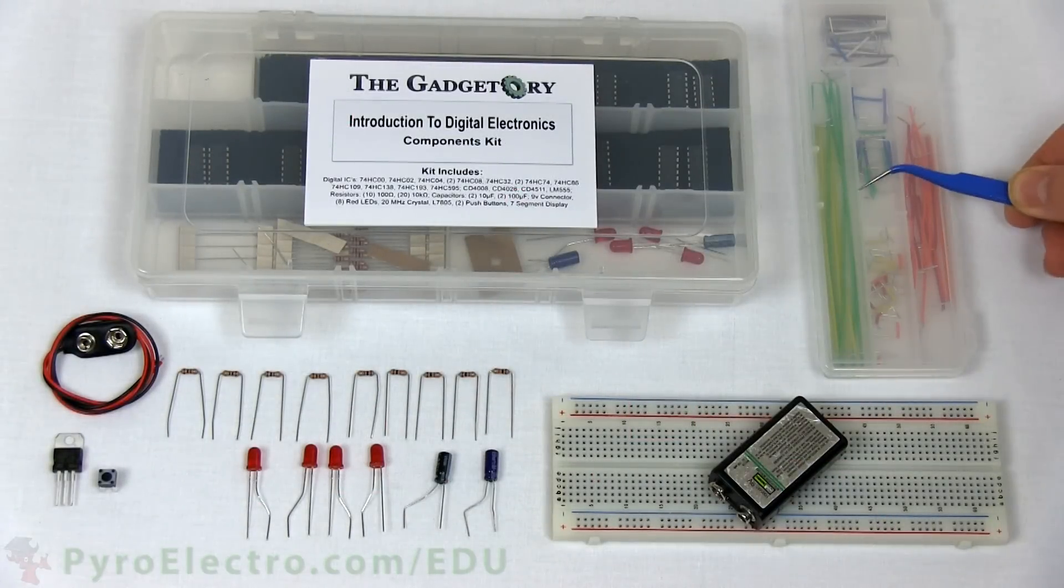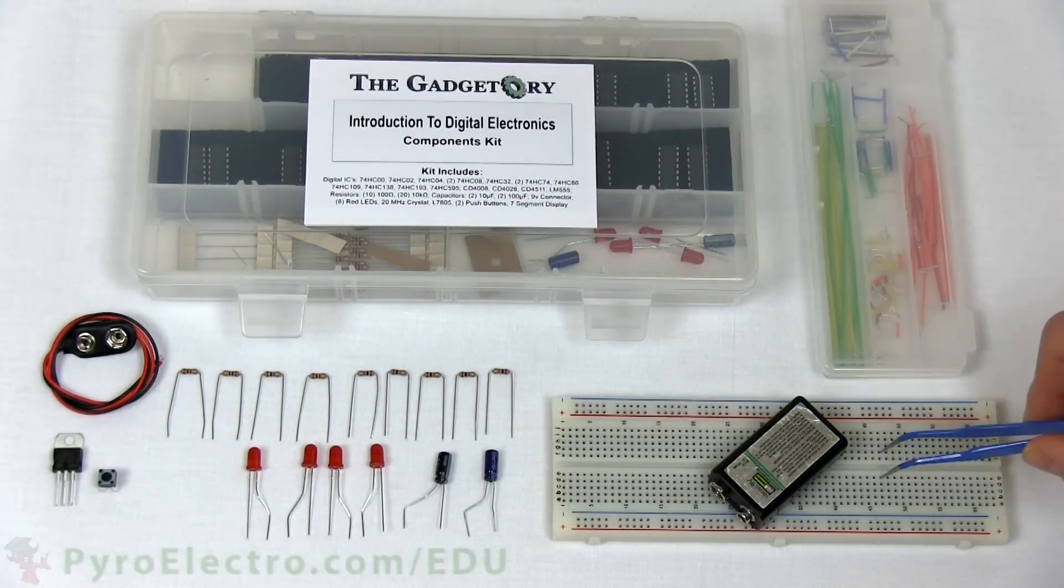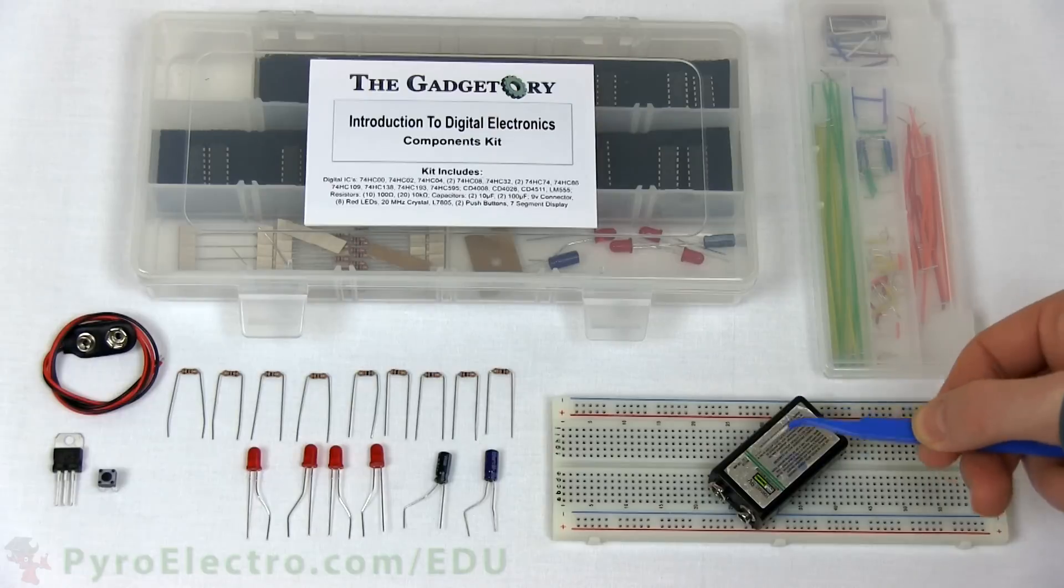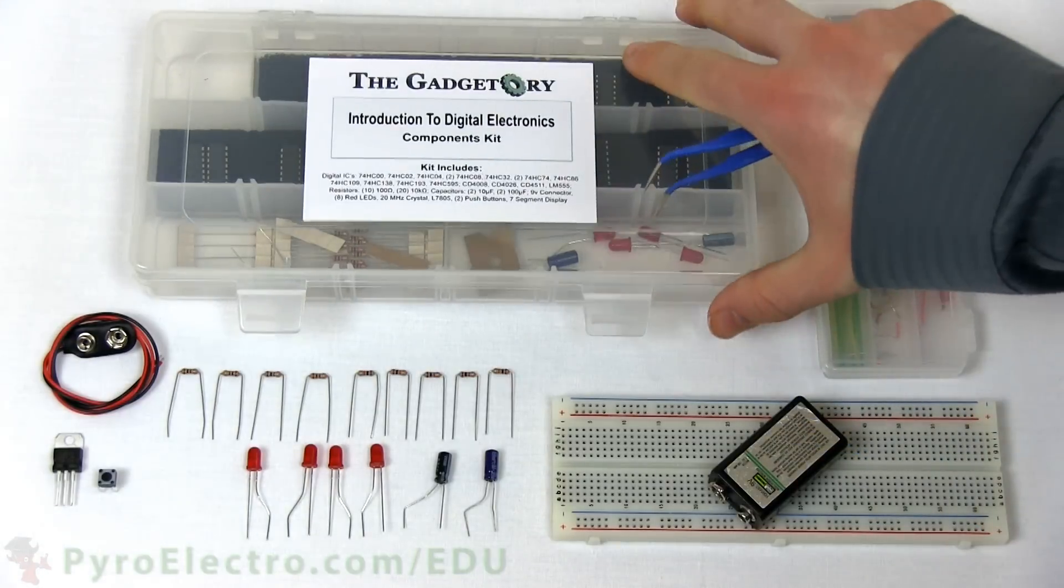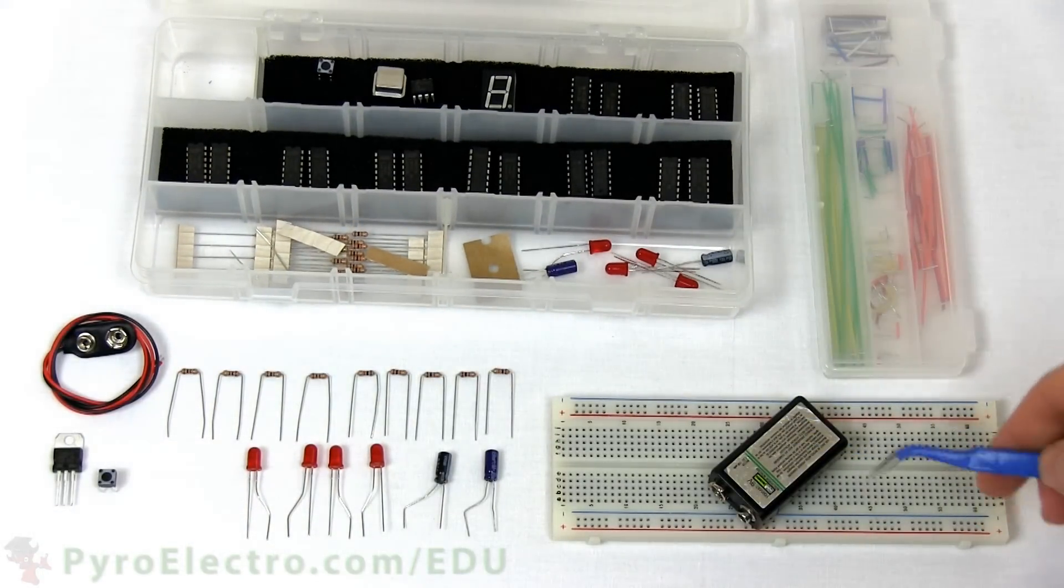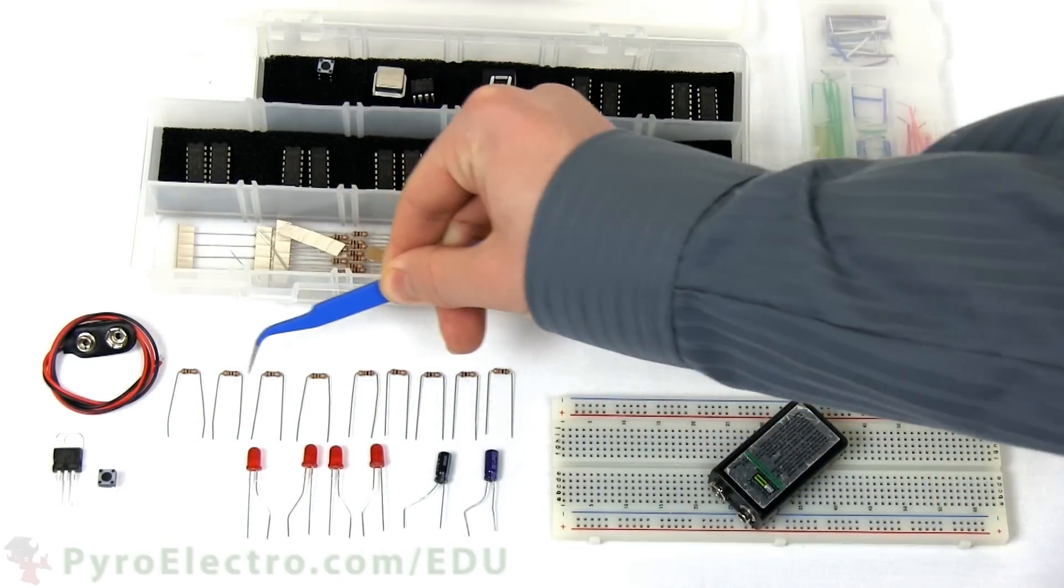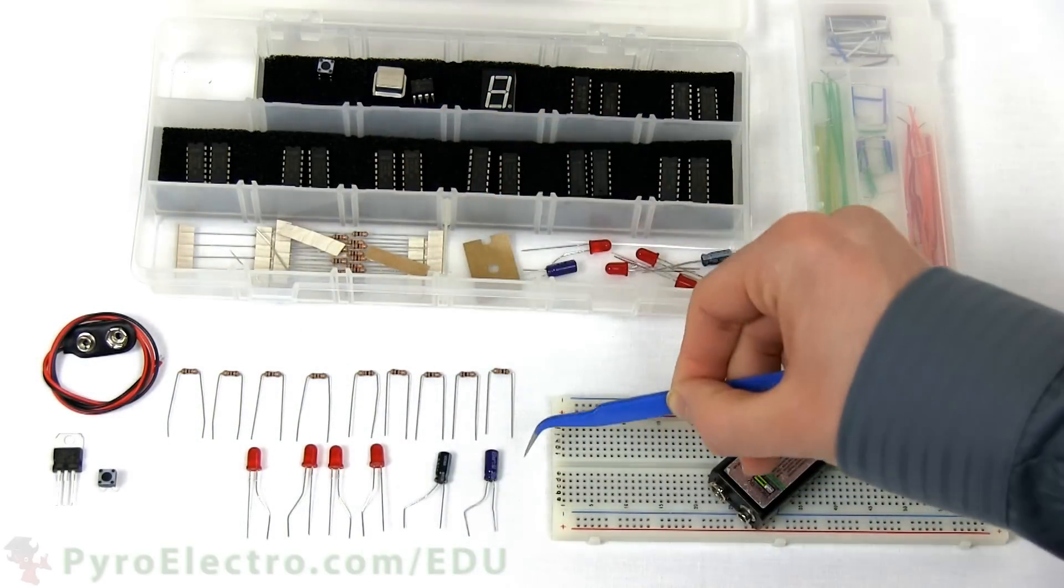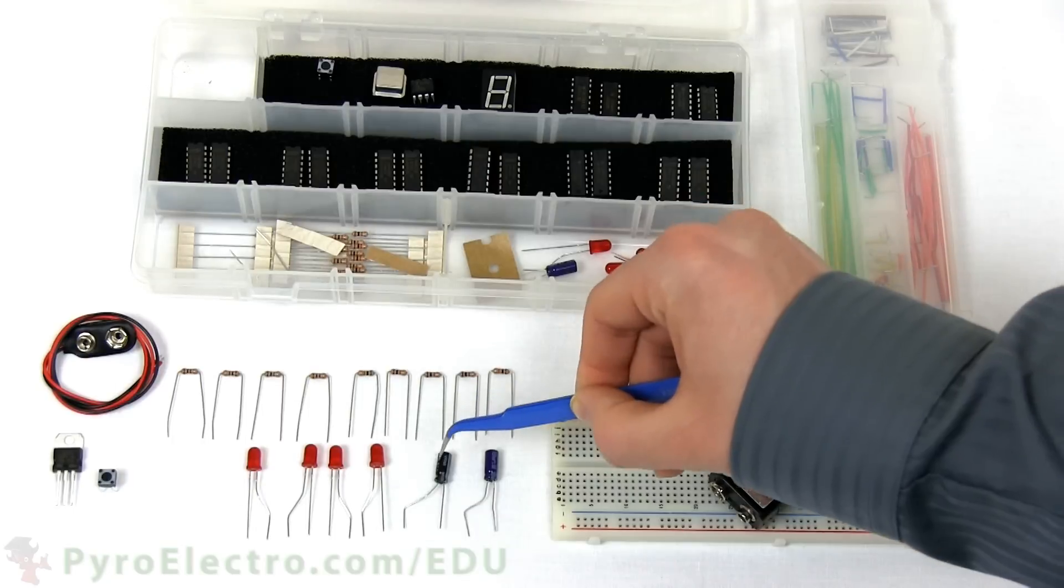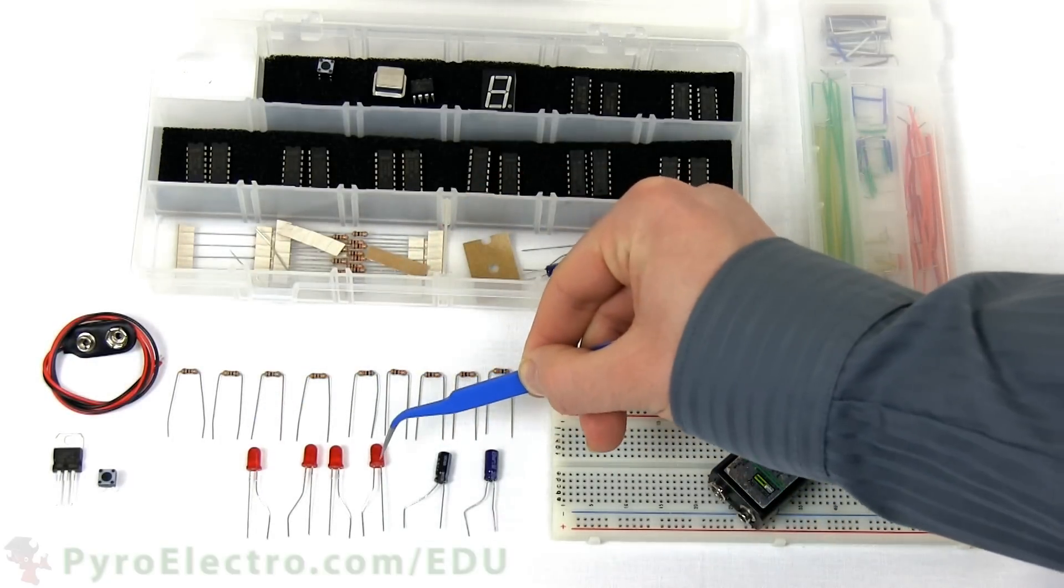The parts we'll need are the jumper wire kit, a breadboard, a 9-volt battery, and from the components kit, 5 10-kiloohm resistors, 4 100-ohm resistors, a 10 and 100 microfarad capacitor,